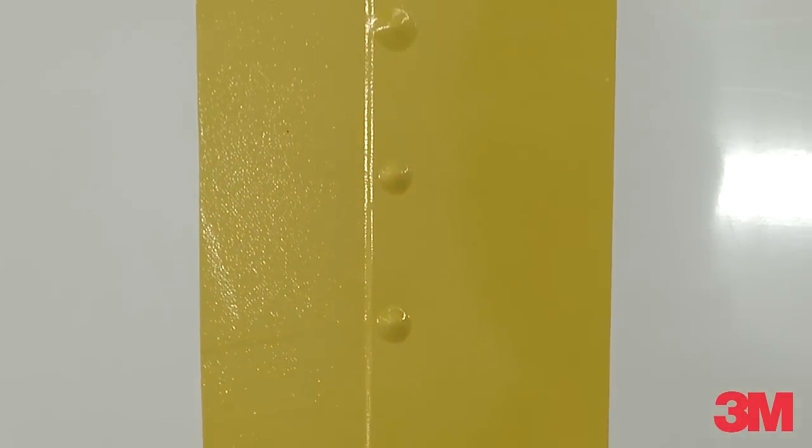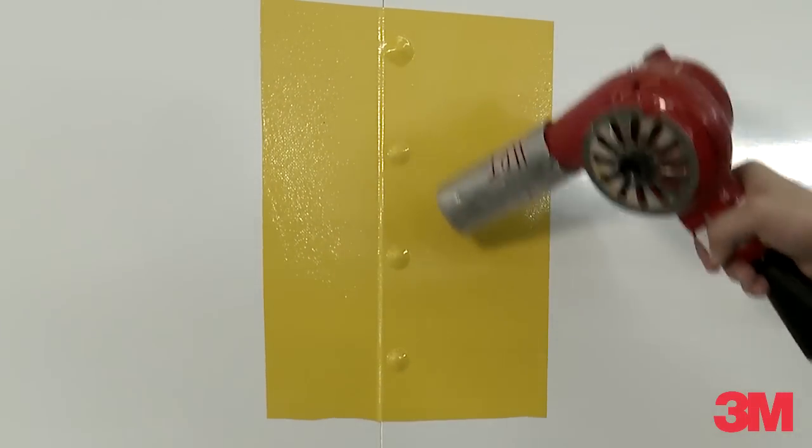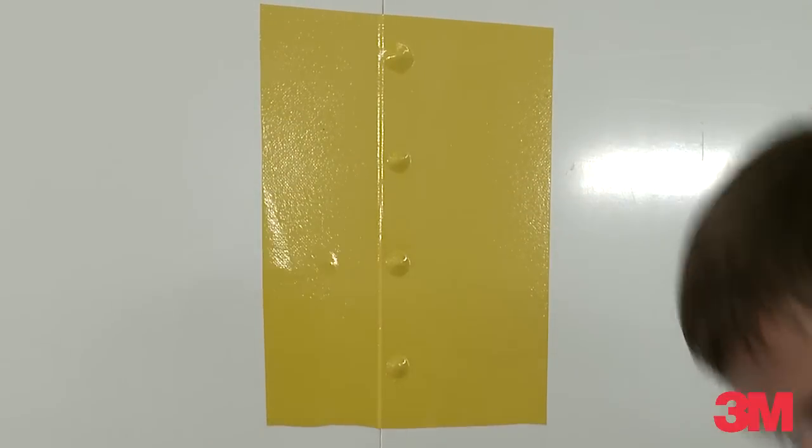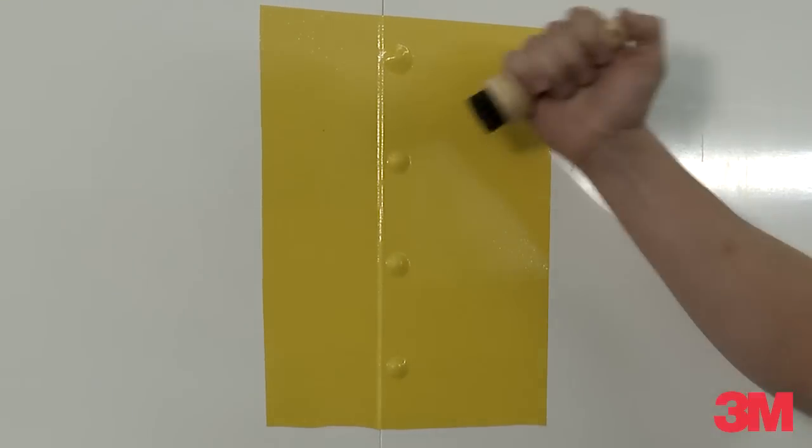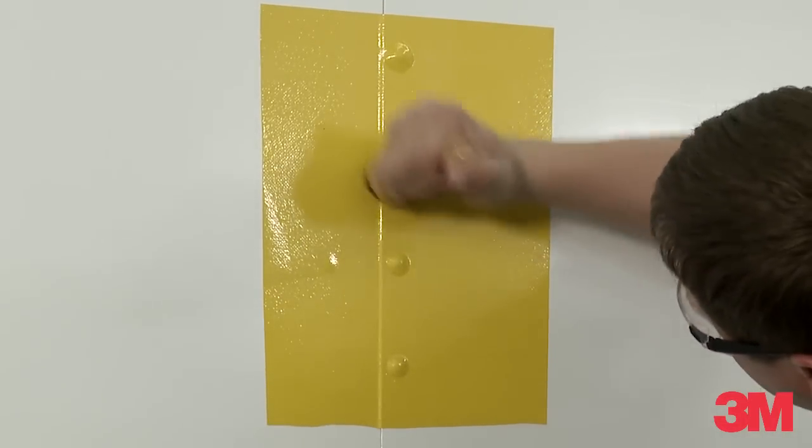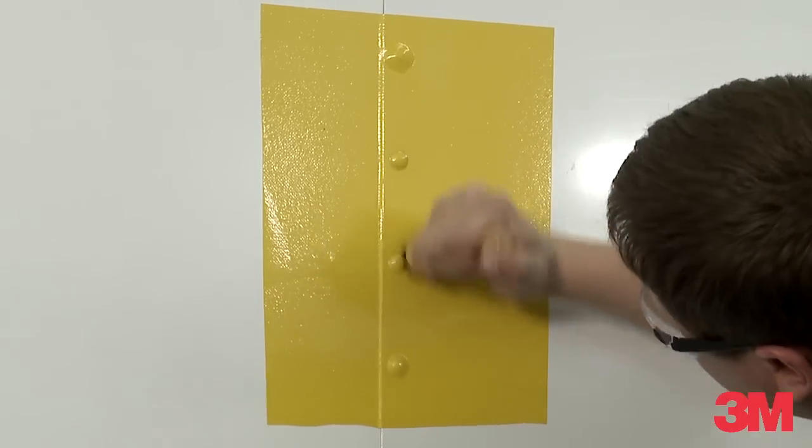So next we can add our heat. What we want to do is relax the film and come back with a rivet brush. Start with wide strokes and come back smaller circles, smaller circles until the rivet is properly finished.